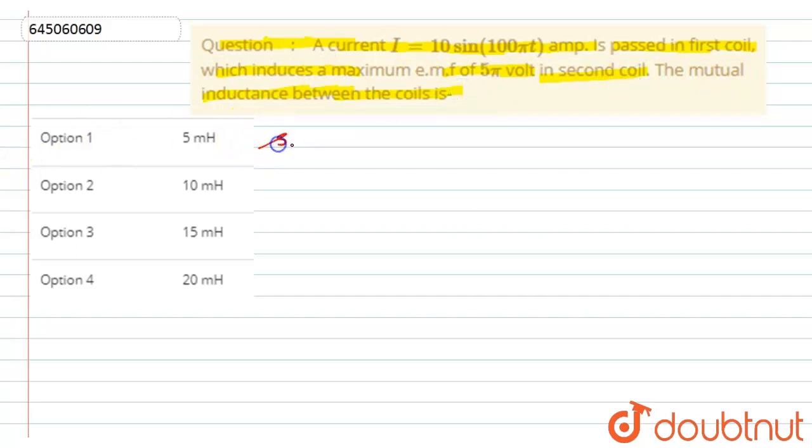Let's look at the solution. According to the question, we have two coils. From one coil, current is passed, that is 10 sin(100πt), and because of which an EMF is induced in the second coil as E_max of 5π volts. In that case, what will be the mutual inductance? That we have to find.